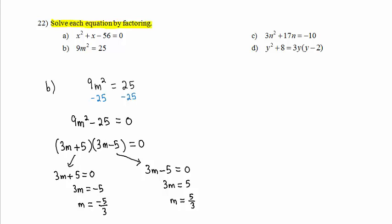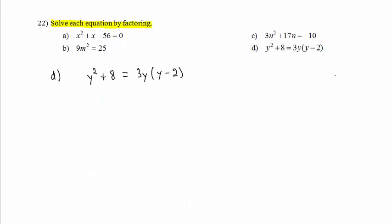Now let's move on to Part D. In order to get 0 on one side of the equation, we will have to do some expanding and cleaning up. The right-hand side occurs after some distribution. I'm going to subtract y squared from both sides. We have 8 equals 2y squared minus 6y. I will also subtract 8 from both sides. We have 0 equals 2y squared minus 6y minus 8.